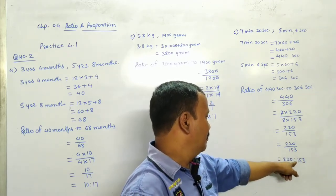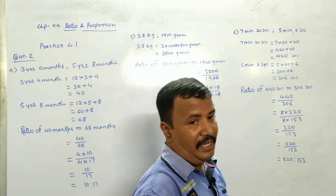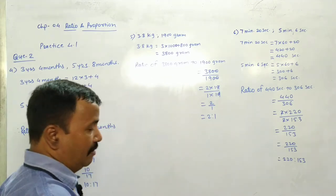So, final is 220 divided by 153. And 220 ratio 153. Understood everyone? Write down.